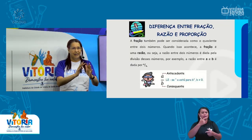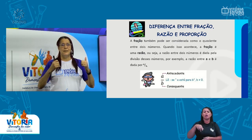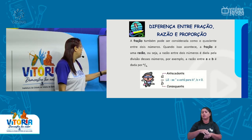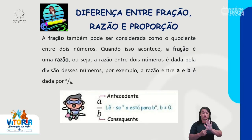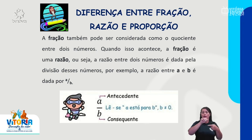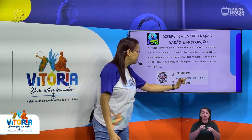Para resolver, vou trazer novamente a ideia de fração, razão e proporção, para que a gente possa entender grandeza diretamente proporcional e grandeza inversamente proporcional. A fração também pode ser considerada como quociente entre dois números — quando isso acontece, a fração é uma razão. Ou seja, a razão entre dois números é dada pela divisão desses números. Por exemplo, a razão entre A e B é dada por A sobre B, onde A é o antecedente e B é o consequente, lendo-se "A está para B".